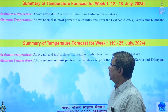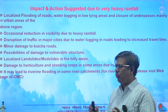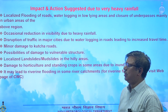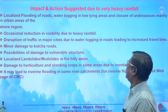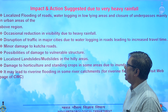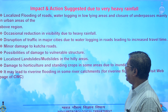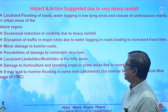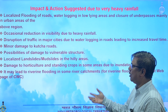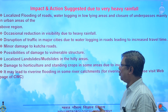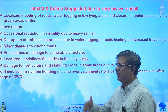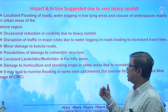The main extreme weather warning is heavy to very heavy rainfall. This will impact normal life, causing localized flooding over roads, waterlogging in low-lying areas, closure of some underpasses in urban areas, and flash flooding in urban areas. There will also be occasional reduction of visibility due to heavy rain on roads, potential disruption of traffic, traffic jams due to waterlogging, minor damage to kutcha roads, and possibility of damage to vulnerable structures.